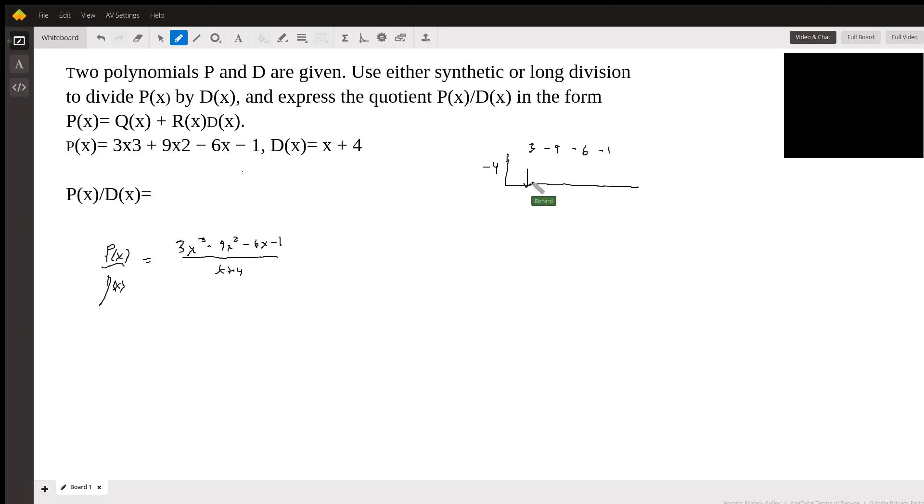We bring down the 3. 3 times negative 4 is negative 12. We add these two together, we get negative 21. So keep going now.